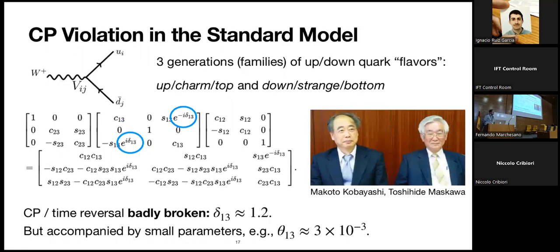We also know that the world around us violates time reversal or CP. The theoretical observation was made by Kobayashi and Maskawa, who pointed out that if there are three generations of fermions, their mass mixing matrix has a complex parameter. We now know this parameter is large — there's an order-one CP-violating phase in the CKM mixing matrix. Interestingly, it's always accompanied by small parameters corresponding to small mixings among different flavors, so even though the phase is large, its effects are relatively small.